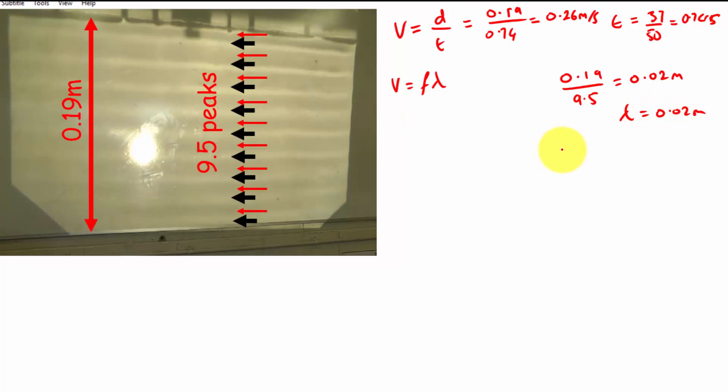And the frequency will be normally given by 1 over big T, and big T is the time for one complete wave to pass a point. Well, we had 9.5 waves in 0.74 seconds, so I'm going to do a slight variation on this: 9.5 divided by 0.74 to get me the frequency, because 9.5 waves traveled past this point in 0.74 seconds, which gives me a value of 12.84 hertz.